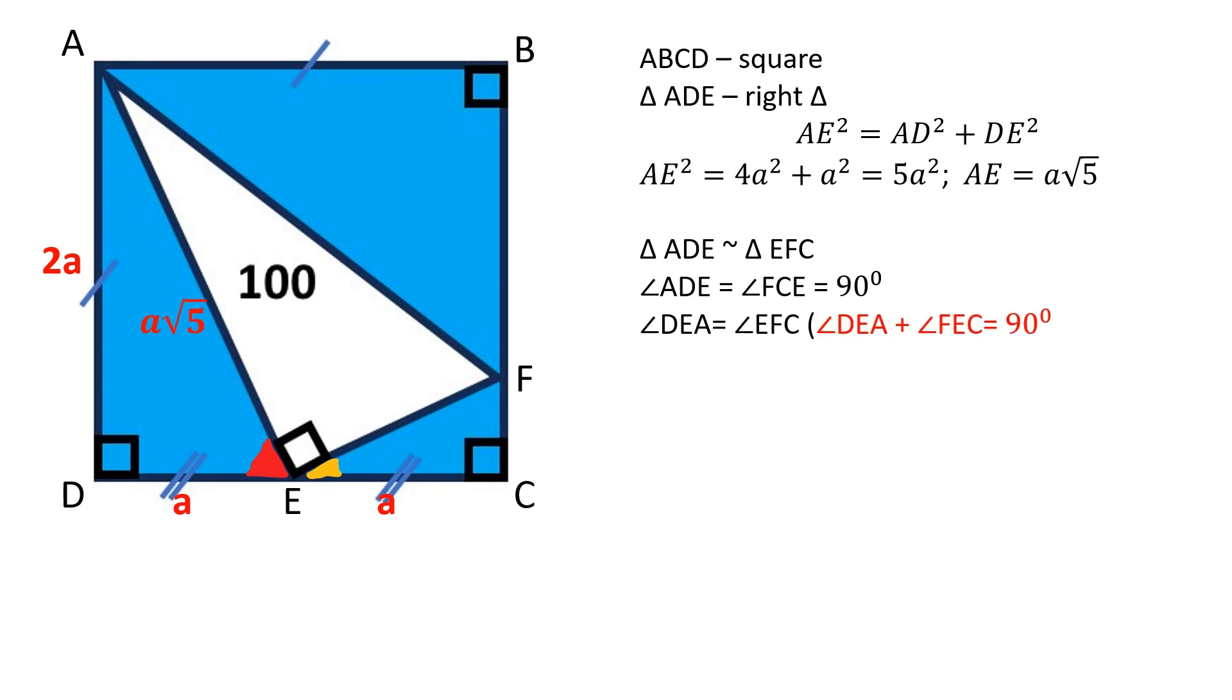the sum of angles DEA and FEC is equal to 90 degrees. And since the sum of angles EFC and FEC is also equal to 90 degrees, angles DEA and EFC are congruent.